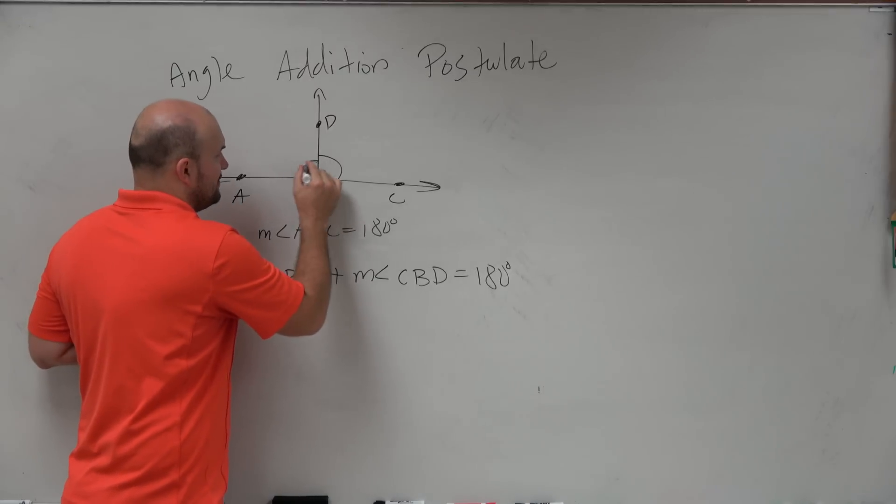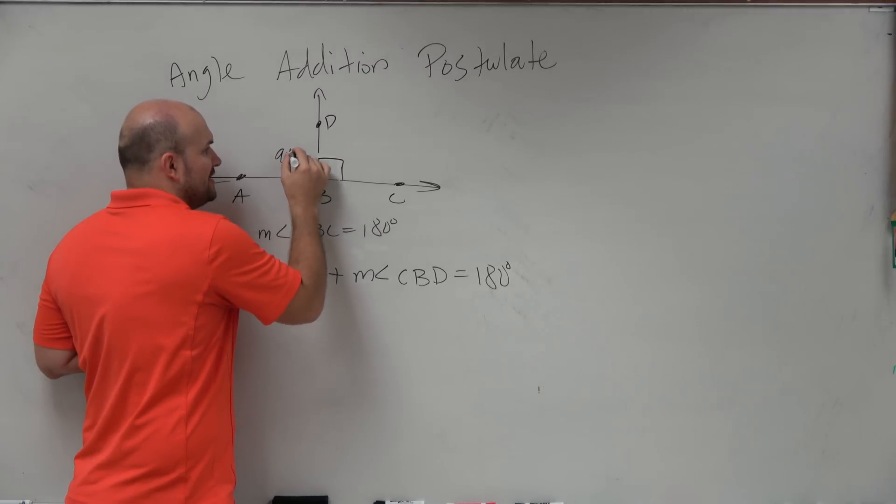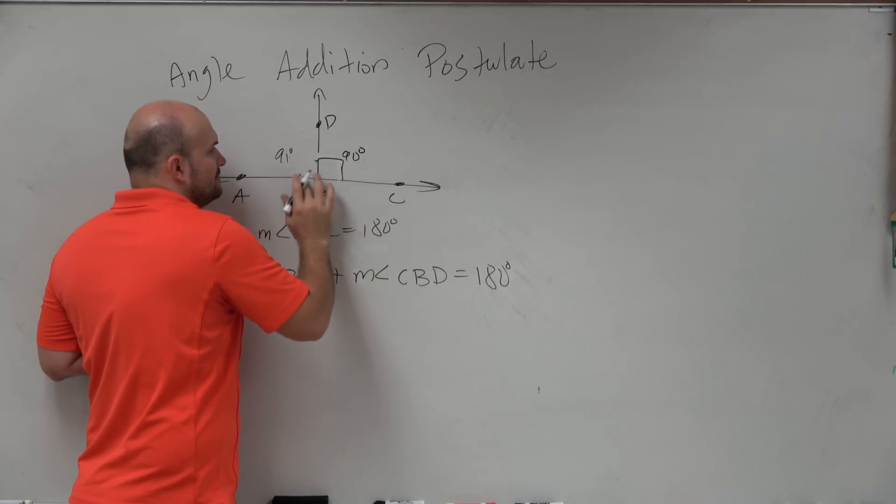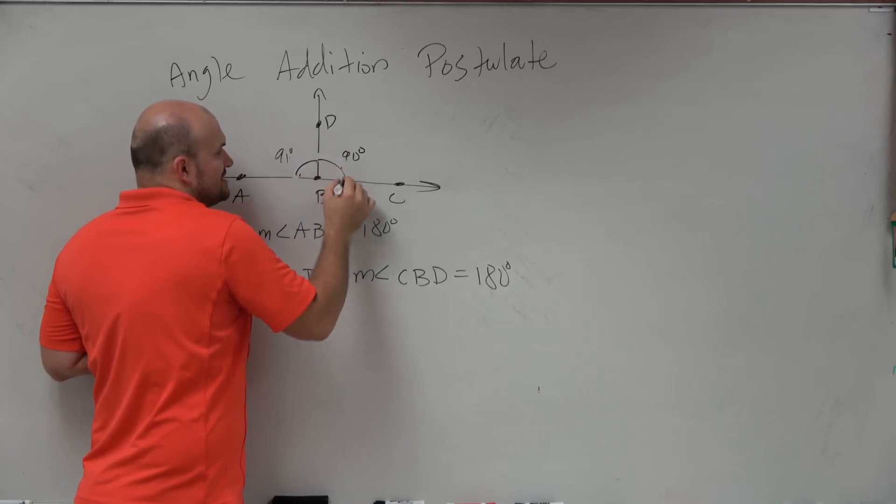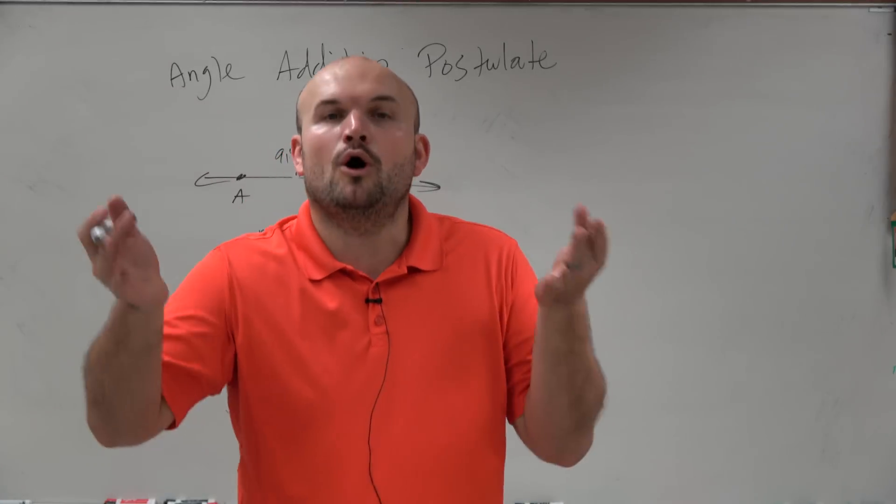And it doesn't matter, this could be perfectly, right? So that creates two right angles, which we know those are 90 degrees and 90 degrees, right? But what if I change this to like 91? So if this was now 91, that means this one would have to be 89 degrees, right? I mean, because they're always going to add up to 180.